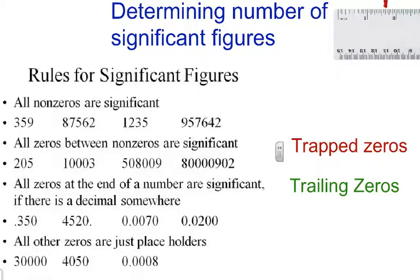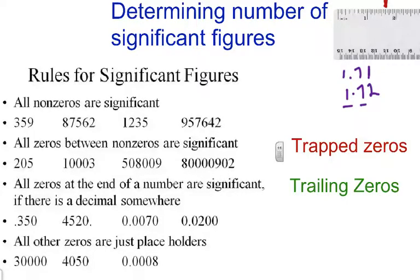As we discussed before, in terms of measurements, significant figures are found by the numbers that you are certain of, and one that you're uncertain of. For example, this mark right here at the top of the ruler — you would see that it's at 1.7, so we're sure of 1.7, and the number after it we're not quite sure, so it could be 1.71 or 1.72. So we're sure of the 1, we're sure of the 7, but the last digit in the hundredths place we're not sure of.